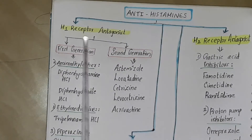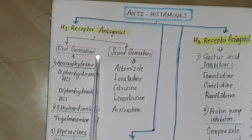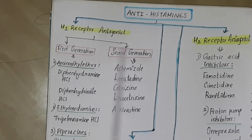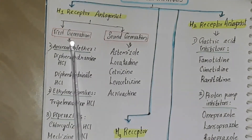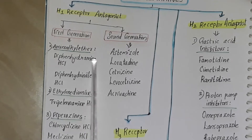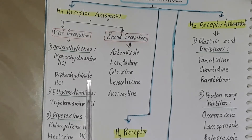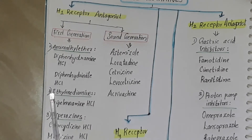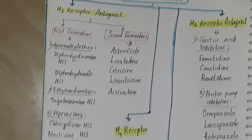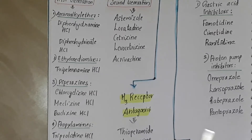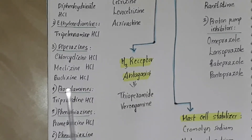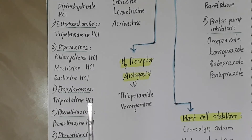H1 receptor antagonists are again classified as first generation and second generation. The first generation drugs include aminoalkyl ethers: diphenhydramine hydrochloride, diphenhydrinate hydrochloride; ethylenediamines: tripylinamine hydrochloride; piperazines: chloracyclisine hydrochloride, meclisine, buclisine; and propylamines: triprolidine hydrochloride.